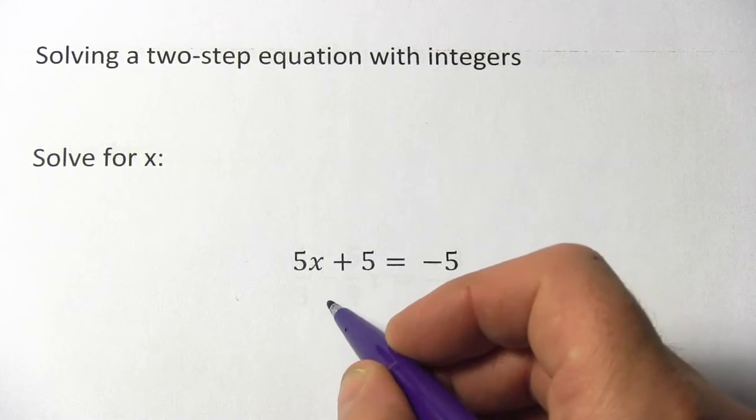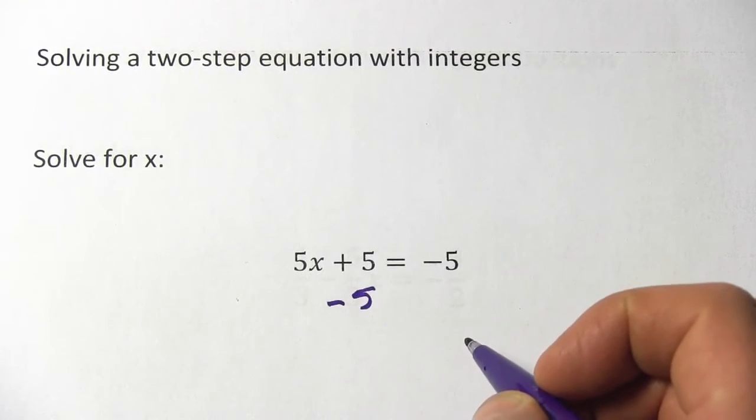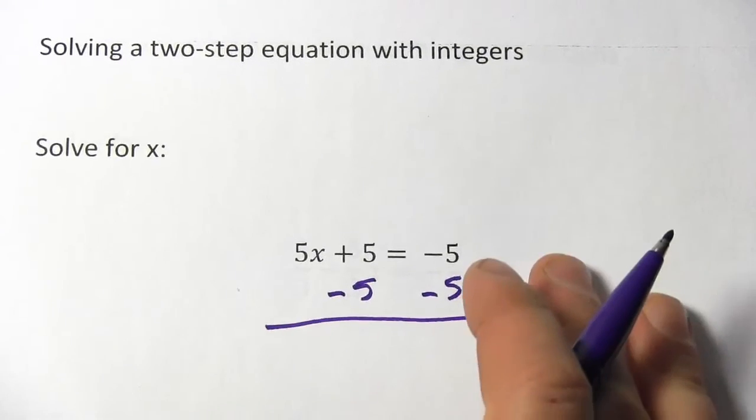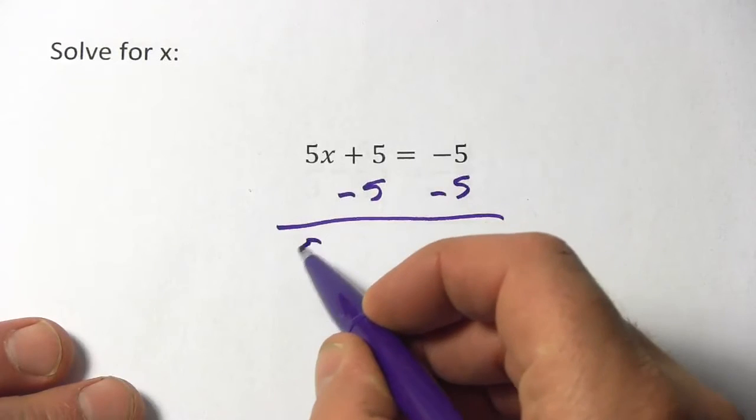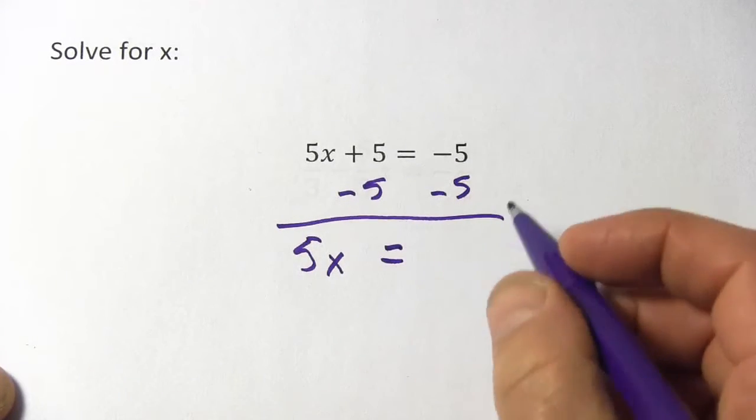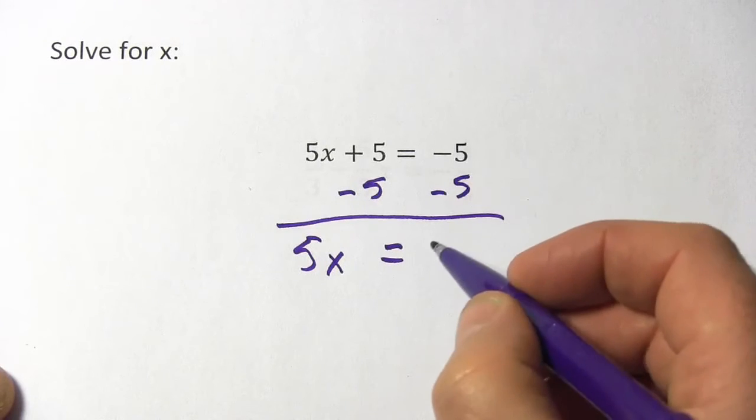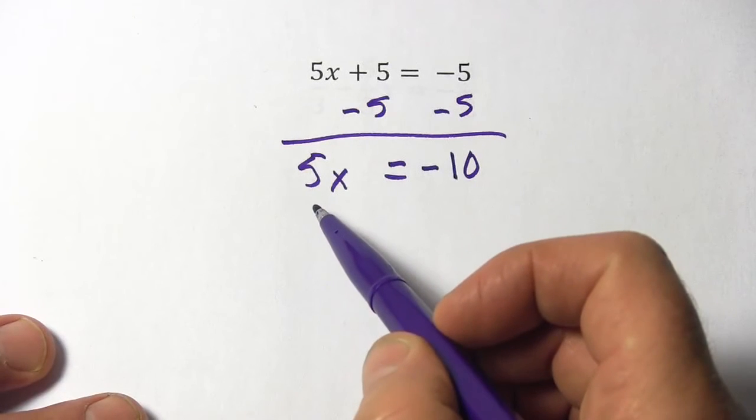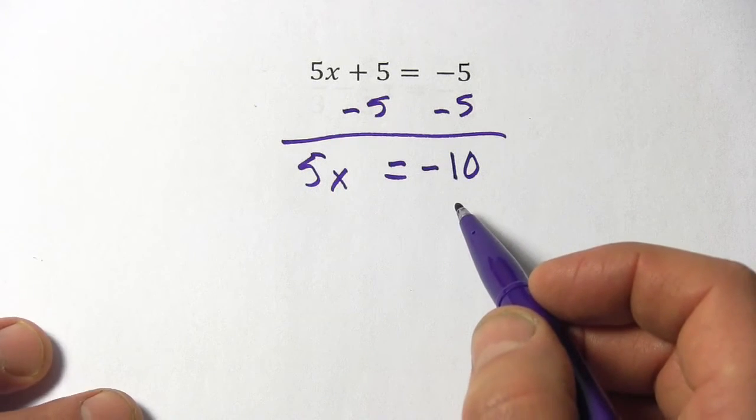So I'm going to undo this plus 5 with a minus 5. Of course to keep the equation balanced we need to do that over here as well. And now we're going to get 5x and plus 5 minus 5 is just 0 so I won't write that. And negative 5 minus 5 is a negative 10. Definitely want to be careful with your signs. Now we have 5x equals negative 10.